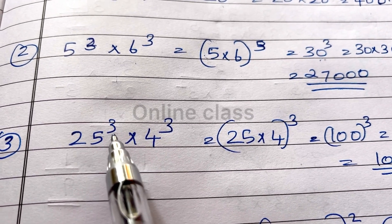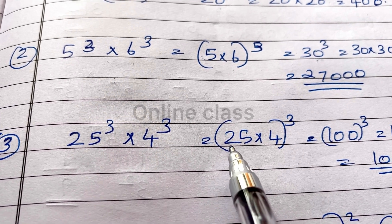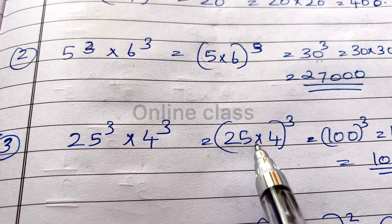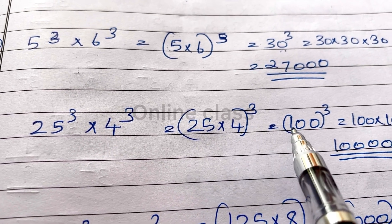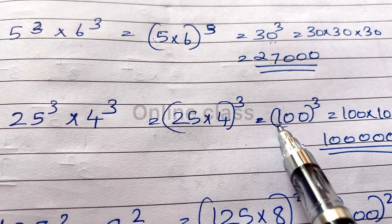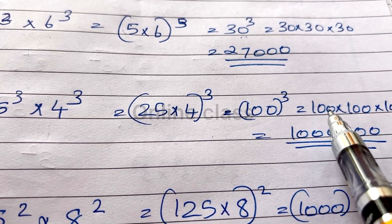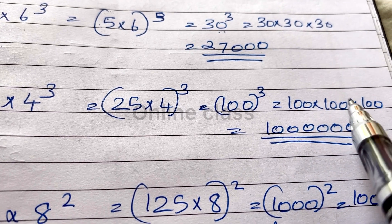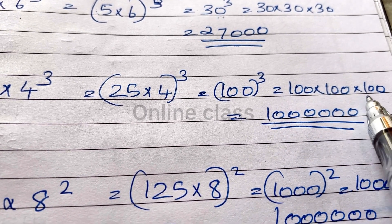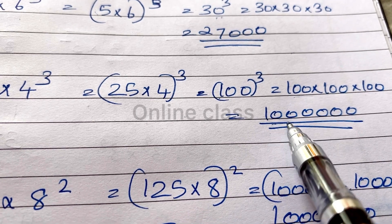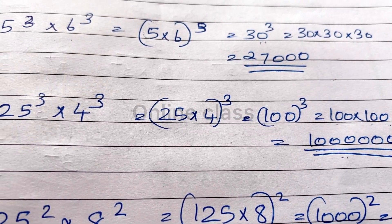Next is 25 cube into 4 cube. We get 25 into 4, whole cube. 25 into 4 is 100. 100 whole cube is 100 into 100 into 100. 1 into 1 into 1 is 1, and the answer is 1,000,000.